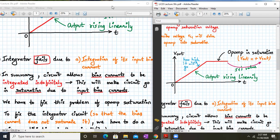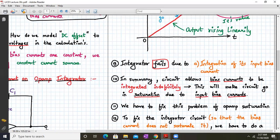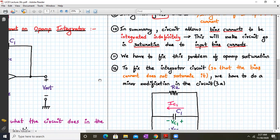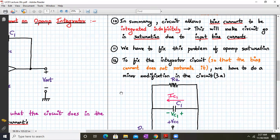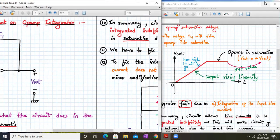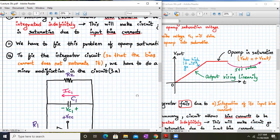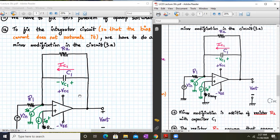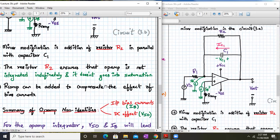That means integrator fails because of its input bias current. In summary, circuits allow bias current to be integrated indefinitely. This will make the circuit go into saturation due to input bias currents. We have to fix this problem of op-amp saturation. To fix the integrator circuit so that the bias current does not saturate it, we have to do a minor modification. What we have added over here is resistor r2 in parallel with capacitor c1.